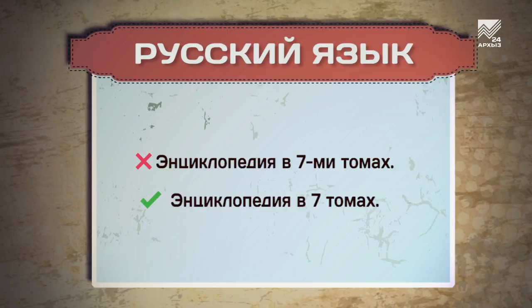Энциклопедия в семи томах. При письме буквенные наращения бывают только в окончании порядковых числительных: первый, второй, десятый. При сочетании с количественными числительными, которые означают счёт — один, два, три — так делать нельзя.